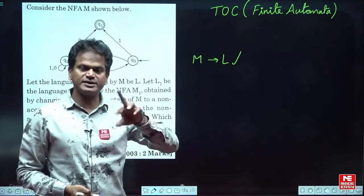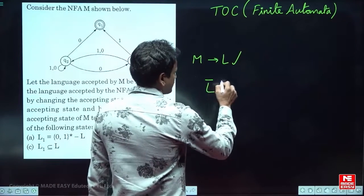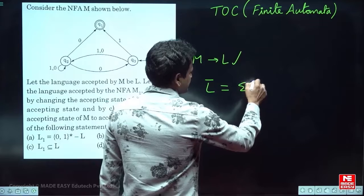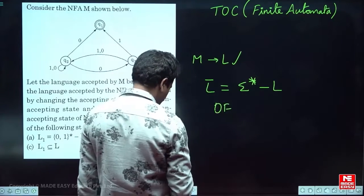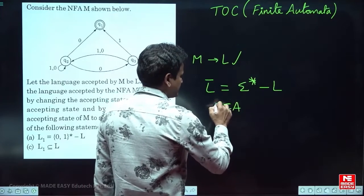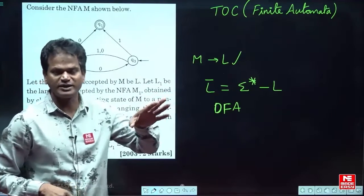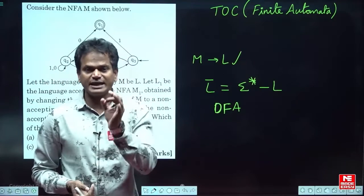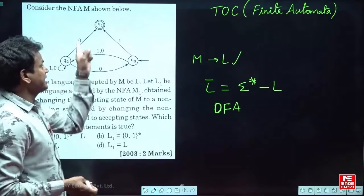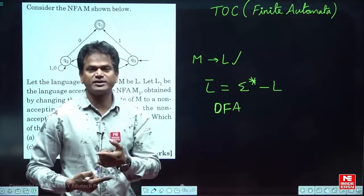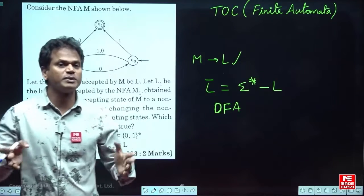Whenever we interchange the final and non-final states, the language must be the complement — sigma star minus L. This is true in the case of DFA only. If the given machine is an NFA, when you interchange final and non-final states, the language may not be the exact complement of L.